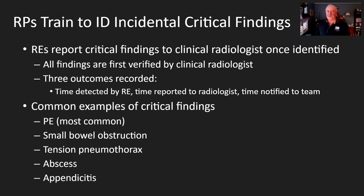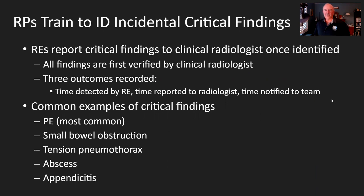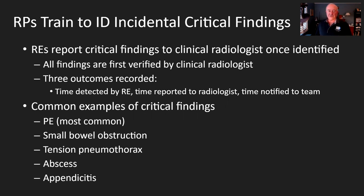If there are discordant measurements, we report that on a separate document for learning. The interactive reporting brings all the data into our report without us having to cross-reference. RPs are also trained to report critical findings once identified — that would be triage. They would say, 'Dr. Folio, I think you need to look at this exam sooner than later.' We'll pick up that exam next and get it read and contact the referring clinician. It could be PE, pulmonary embolus — one of the most common — also tension pneumothorax, small bowel obstruction, abscess, appendicitis. There are about 10 to 20 of these that they learn about.